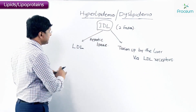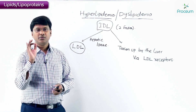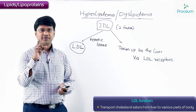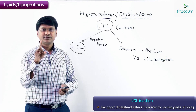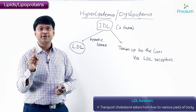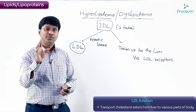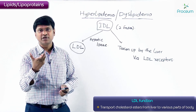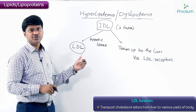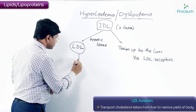The function of LDL is to transport mainly cholesterol esters. For transportation of dietary triglycerides, chylomicrons are required, whereas for transportation of triglycerides endogenously synthesized in the liver, VLDL is required. Cholesterol is transported by LDL lipoprotein, which transports cholesterol esters.